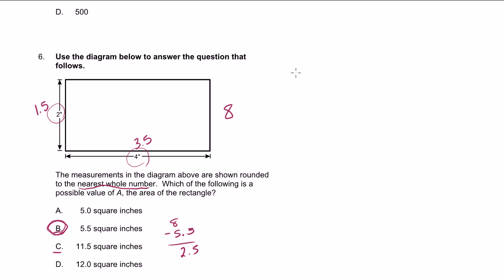So 3.5 times 1.5. 5 times 5 is 25. 3 times 5 is 15, plus 2 is 17. Put a 0 down. 1 times 5 is 5, 1 times 3 is 3. 5. 7 plus 5 is 12.